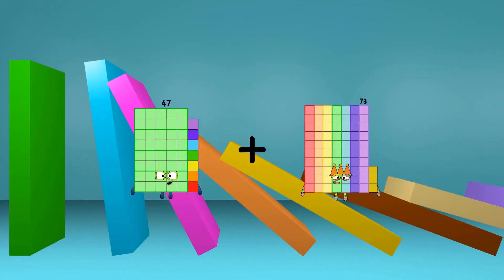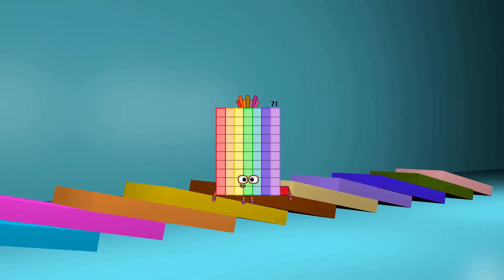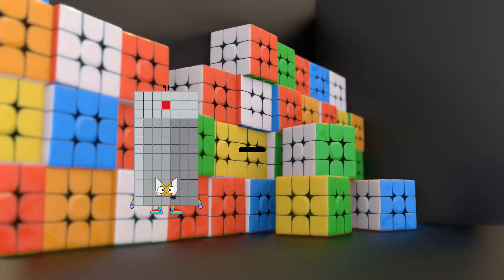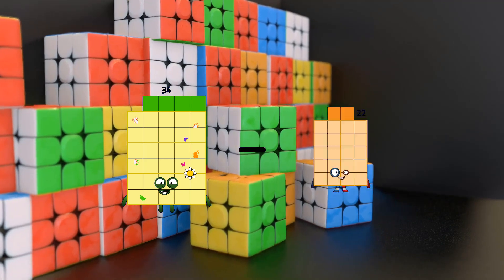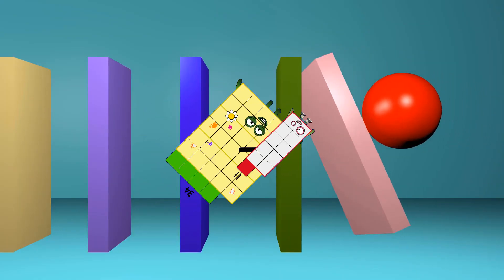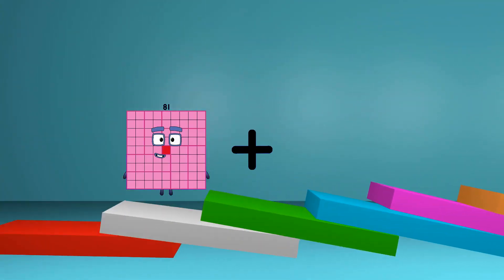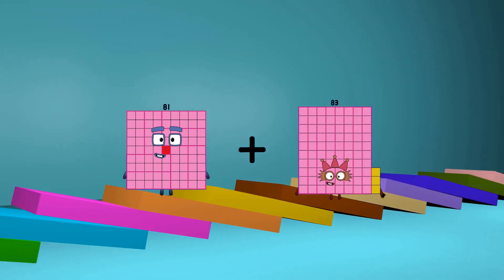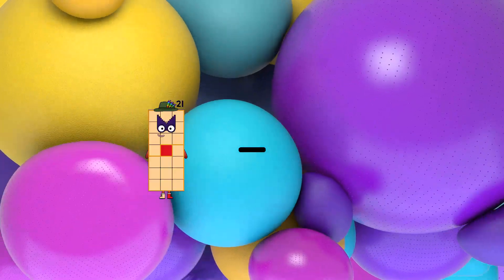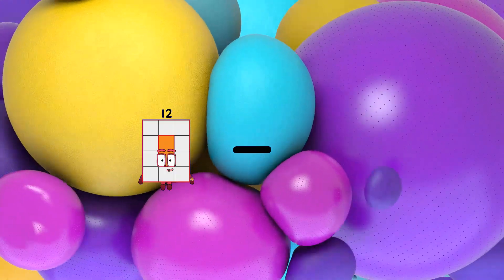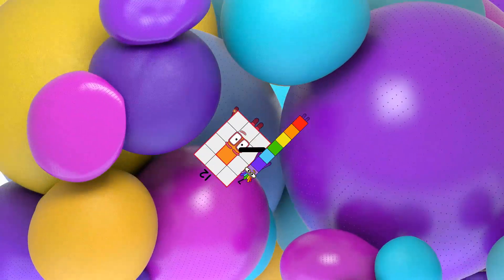47 plus 24 equals 71. 34 minus 11 equals 23. 81 plus 25 equals 106. 12 minus 7 equals 5.